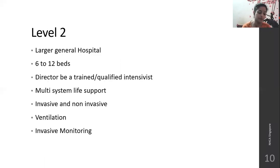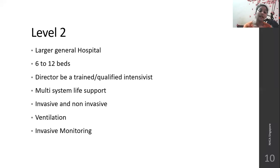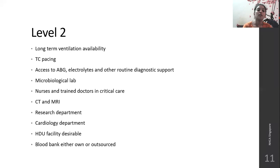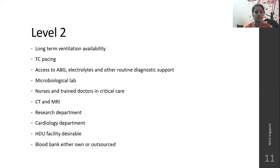In level 2 hospitals, they are larger general hospitals. They will have at least 6 to 12 beds and the director will be a trained, qualified intensivist. Multi-system life support is provided in level 2. If it is a multi-system failure, care can be given. Invasive as well as non-invasive treatments are provided. Ventilation is available for more than 48 hours. Invasive monitoring is done. Long-term ventilation is available. Pacemaking is also available. Access to ABG, electrolytes, and other routine diagnostic support is provided. They have their own designated microbiological lab within the hospital.